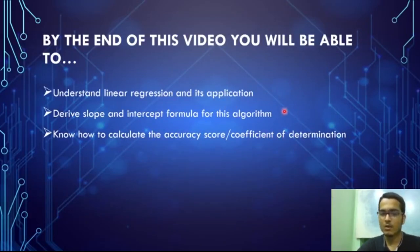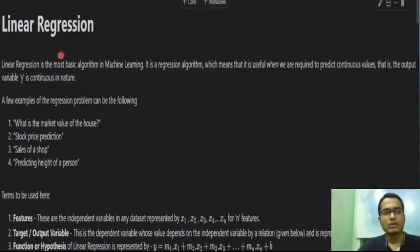Linear regression is the most basic algorithm in machine learning. It is the simplest one and it is really useful when we are required to predict continuous values, that is, the output of the variable is continuous in nature. That's the meaning of regression.